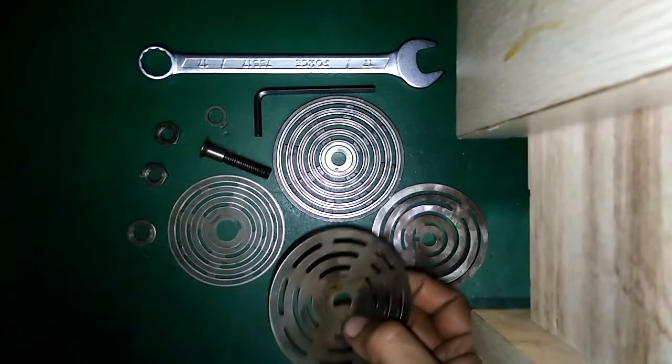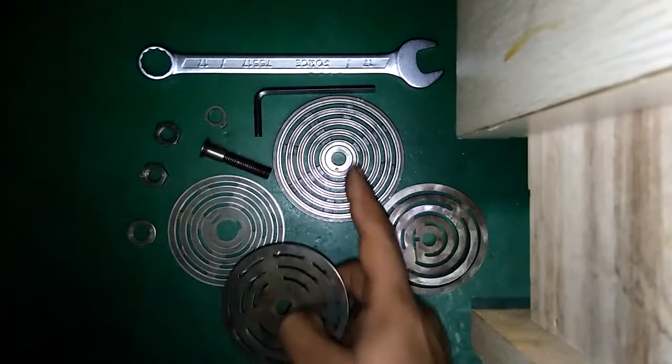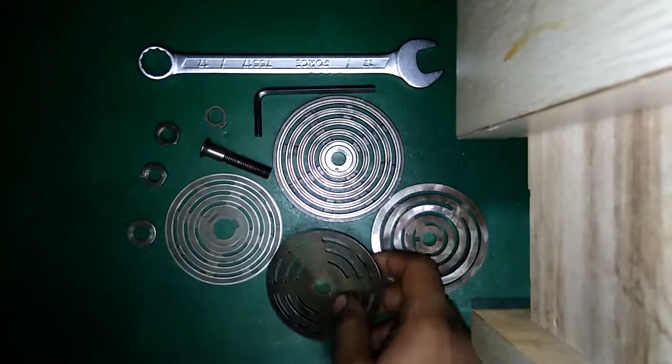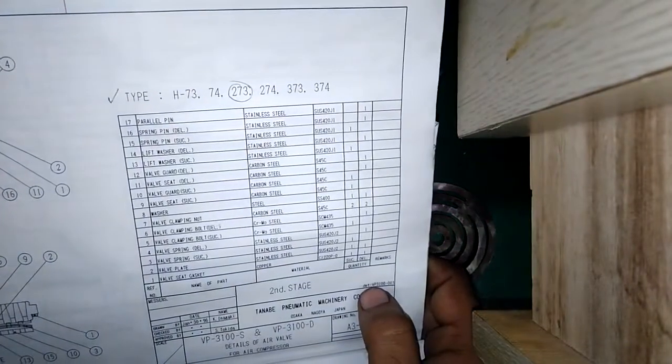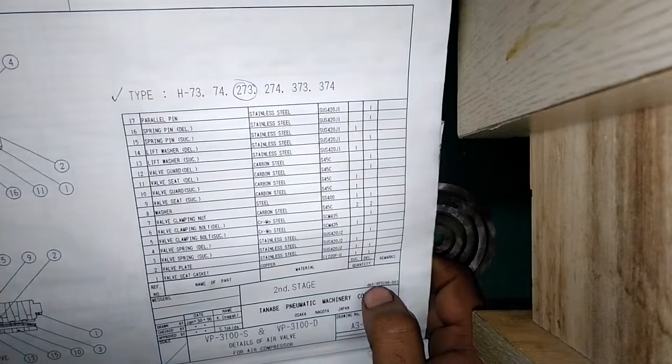This is the valve guard inlet, a hole in it which aligns with the pin hole.